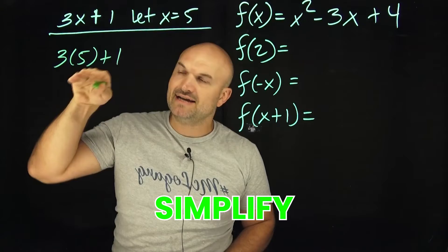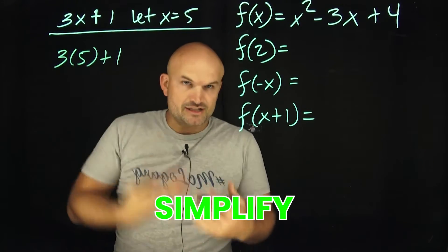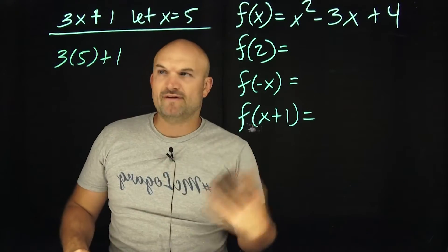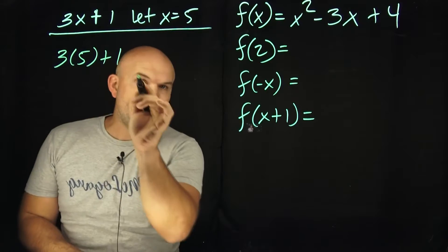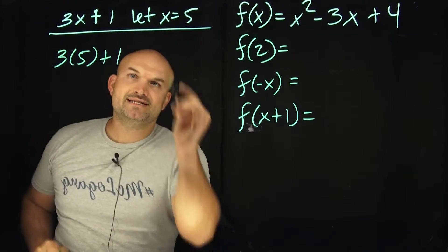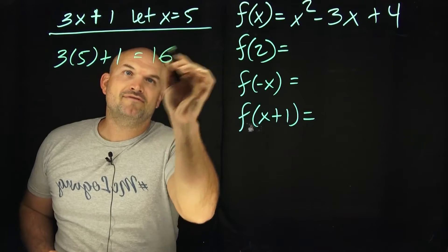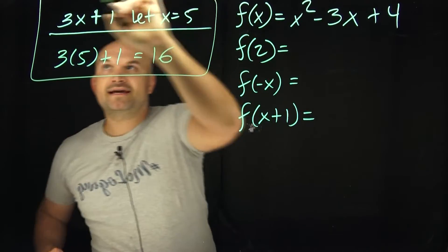And so now to simplify this operation or simplify this expression, just make sure you apply or follow the order of operations. We're going to multiply before we add. So in this case, I'll have 3 times 5, which is 15, plus 1 is equal to 16. So that would be my final answer for a problem like that.